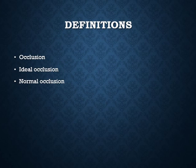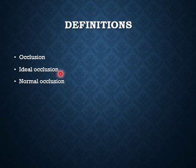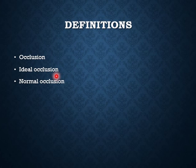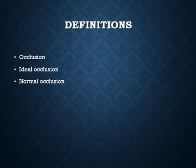Some important definitions. Occlusion: any position or relationship in which the upper and lower teeth come together. Ideal occlusion is a theoretical concept of an ideal arrangement of the teeth within the dental arches, combined with the ideal inter-arch relationship, which ensures optimal aesthetic function and stability of the dentition and supporting structures, but it is almost never found in nature. Normal occlusion is the occlusion which satisfies the requirements of function and aesthetics, but in which there are minor irregularities.